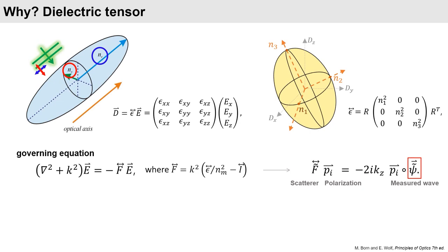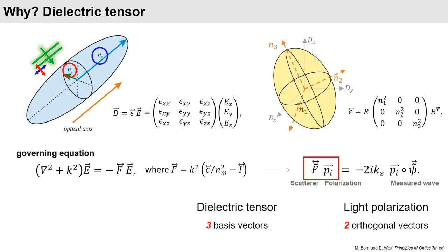To obtain 3D anisotropy, one should decouple the F tensor and pi vector. The dielectric tensor has three basis vectors, so does the F tensor. However, the number of orthogonal polarizations of light is only 2, which makes the underdetermined problem.